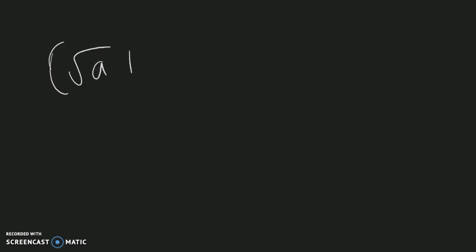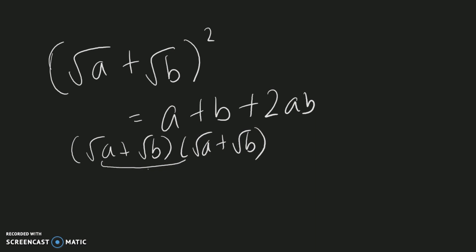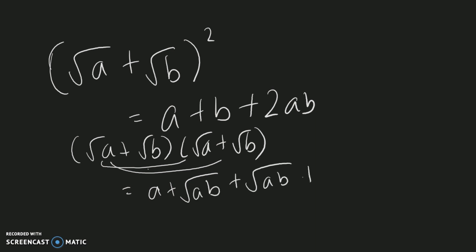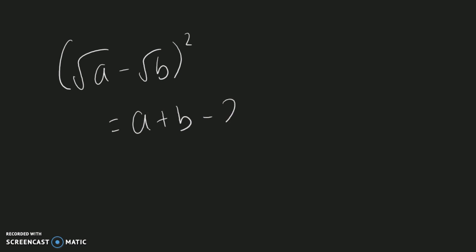The next law is the squaring of surds. The square root of 'a' plus the square root of 'b', whole squared, equals a plus b plus 2 root ab. To see why: expanding (√a + √b)(√a + √b) gives √a·√a + √a·√b + √b·√a + √b·√b, which is a + √(ab) + √(ab) + b, simplifying to a + b + 2√(ab). The negative version is (√a − √b)² equals a + b minus 2 root ab.